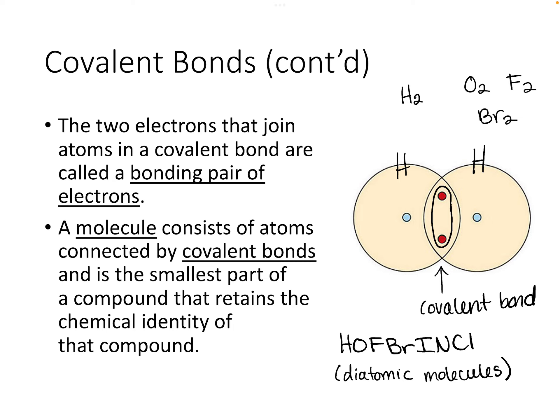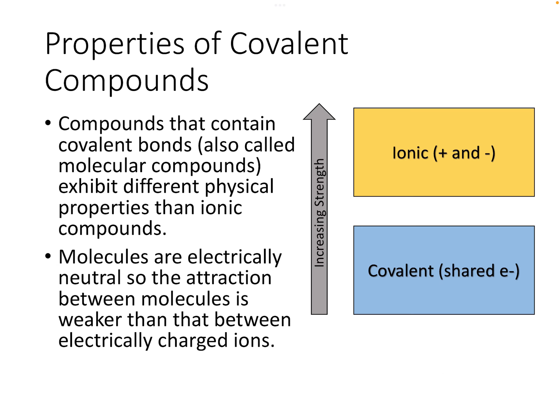Let's talk about properties of molecules versus ionic compounds. Compounds that contain covalent bonds — also called molecular compounds or molecules — exhibit different physical properties than ionic compounds. Physical properties are properties you cannot change about a molecule or compound, such as melting point, boiling point, and density. Molecules are electrically neutral, and that means the attraction between molecules is going to be much weaker than that between electrically charged ions.